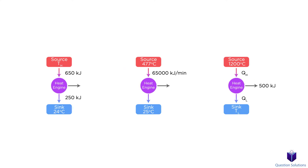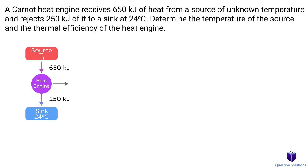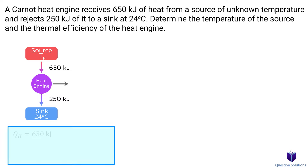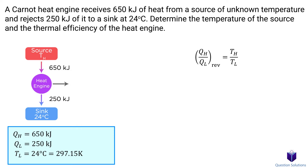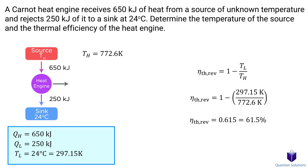Let's go through some problems. In the first problem, we have a Carnot heat engine that receives heat from a source at an unknown temperature. We need to find the temperature of the source and the thermal efficiency. The engine receives 650 kilojoules of energy and rejects 250 kilojoules — those are QH and QL. The sink is at 24 degrees Celsius. Using the Carnot relation QL/QH = TL/TH, we can solve for the source temperature, then plug into the Carnot efficiency equation to find the efficiency.